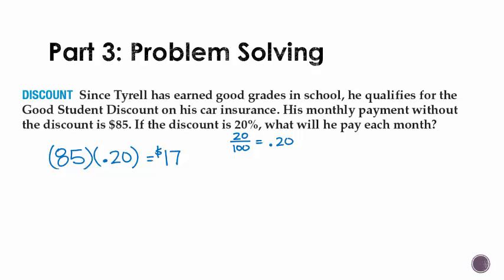Now, unlike the last one, this is a discount, which means he's not going to pay $85 plus $17. He's going to pay $17 less every month because it's a discount. If we subtract these two numbers, we end up with $68.